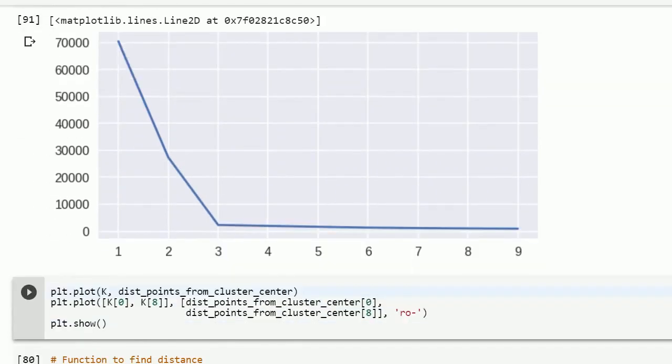So as you can clearly see the elbow like feature is at k equal to 3. Now imagine that you get multiple such unsupervised data every day. It isn't logical to visualize all of them and then find out an elbow like drop and then come to a conclusion about the optimum number of clusters.